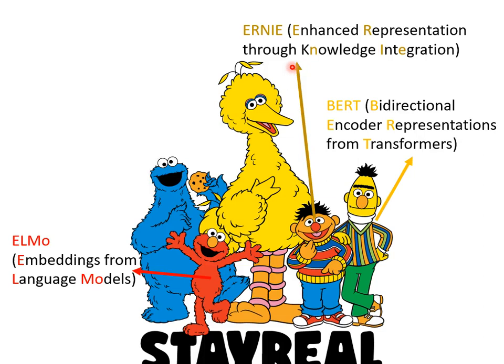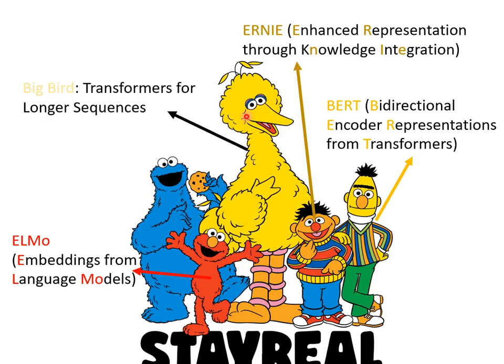You might think this is ridiculous enough, but this animal is called Big Bird, and there is a model called Big Bird whose full name is Transformers for Longer Sequences. Now they even gave up making up words and collecting characters from their name — they just call it Big Bird. In those self-supervised learning models, there are a bunch of characters from Sesame Street. No one has touched Cookie Monster yet — it is waiting for you to make one.